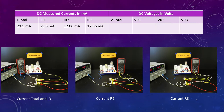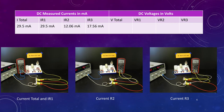First we take measurements around the circuit. For the total current, instead of a clip-on ammeter I used the current mode on my multimeter and got 29.5 milliamps. Then I put the meter into R2 and got 12.6 milliamps, then into R3 and got 17.5 milliamps. You can see the three pictures of those current readings being taken.